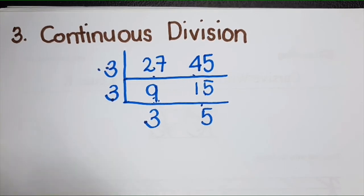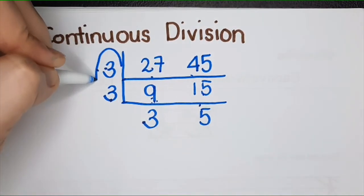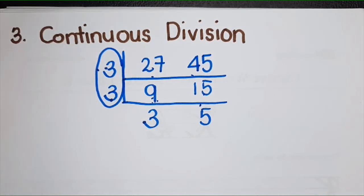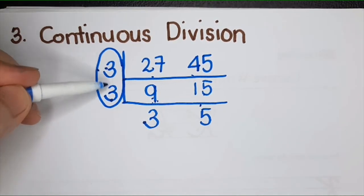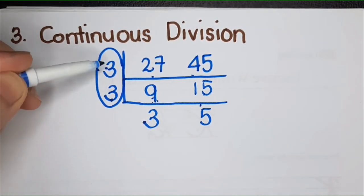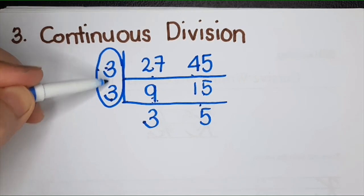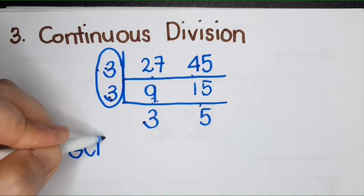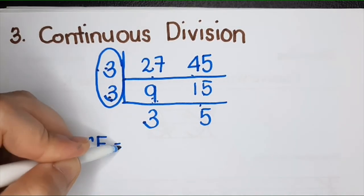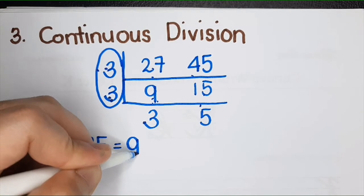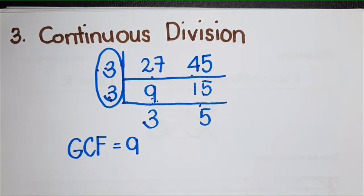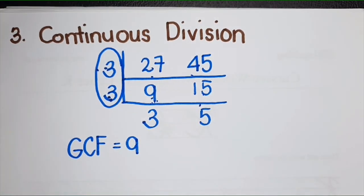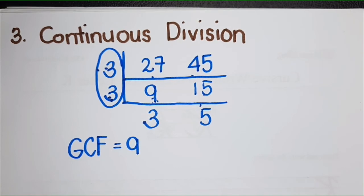The GCF is this. You get the product of the numbers here. So you will get 3 times 3, you get 9. So you say the GCF of 27 and 45 is 9. That's it. It's up to you to choose which method works best for you.